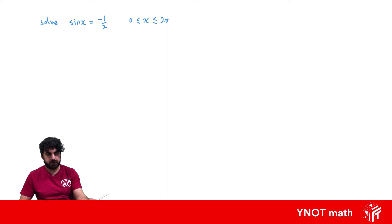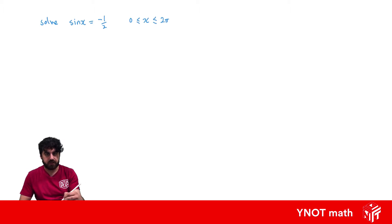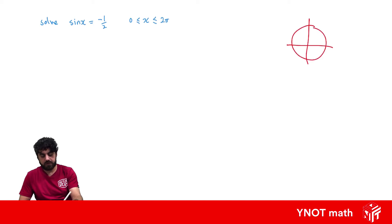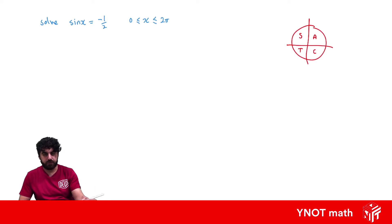In order to solve trigonometric equations we need to remember our unit circle that describes the behavior of sine, cos, and tan functions. Our unit circle tells us that if we have sine, cos, or tan of an angle in the first quadrant, they're all positive. Only sine of an angle in the second quadrant is positive, only tan of an angle in the third quadrant is positive, and only cos of an angle in the fourth quadrant is positive.